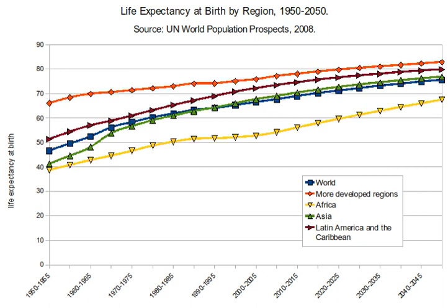Factors that are associated with variations in life expectancy include family history, marital status, economic status, physique, exercise, diet, drug use including smoking and alcohol consumption, disposition, education, environment, sleep, climate, and health care.